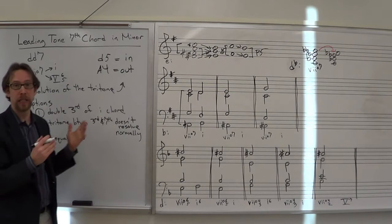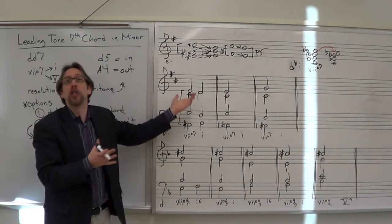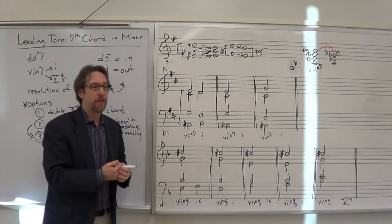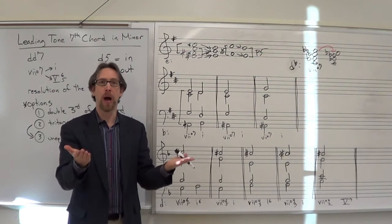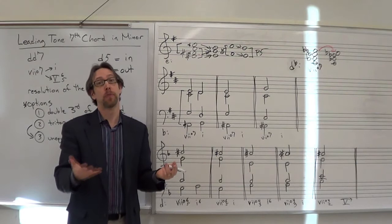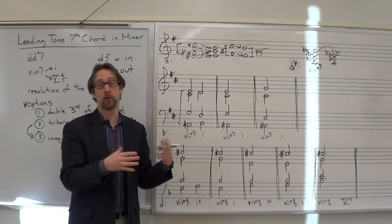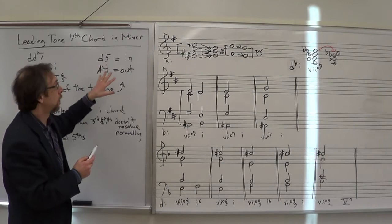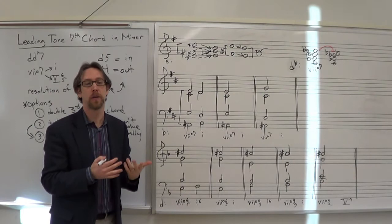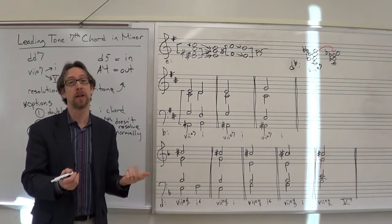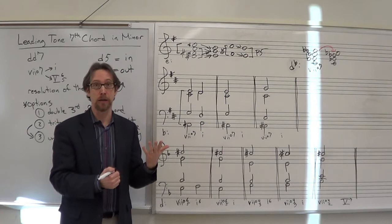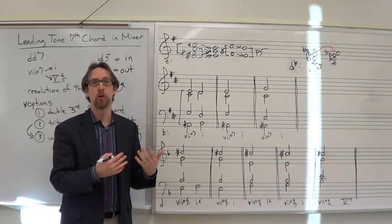Allowing both tritones to resolve as expected results in a slightly unusual doubling in the one chord - doubling the third instead of the root. In voice leading, you often face two competing ideals: the ideal doubling of a root position triad is to double the root, reinforcing the tonal center; on the other hand, you want the tritones to resolve as expected. You can't always have both, so it's a trade-off depending on the phrase and how it fits the music as a whole.